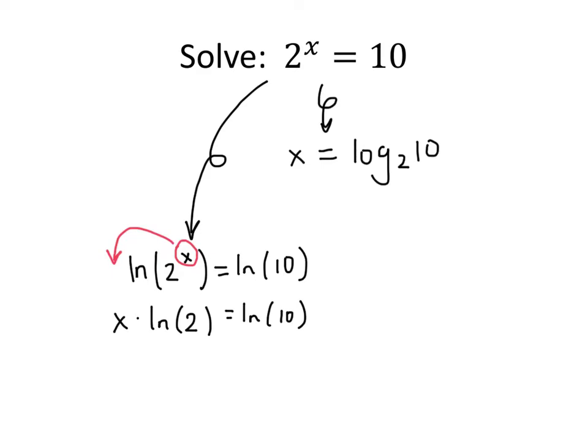Now if I want to solve for x, I can divide both sides by ln(2). The ln(2) divides out on the left, and I get x = ln(10)/ln(2). That's something I can plug into my calculator and get a decimal approximation for.